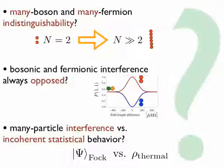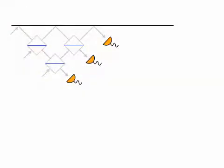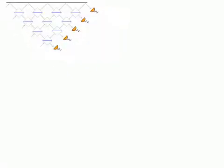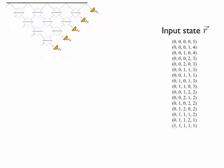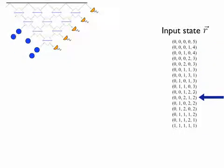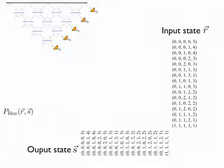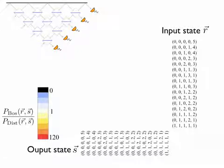We investigate these questions with the help of multiport beam splitters. Combining several elementary beam splitters in a pyramid-like construction, one can build a device with arbitrarily many input and output modes. As an example, let's investigate five-boson interference. There are 16 states of five bosons — all particles may be in one mode, in some distribution over the modes, or all in different modes. We plot the transition probability from an input to an output state for bosons, compared to distinguishable particles, with a color code indicating constructive or destructive bosonic interference.